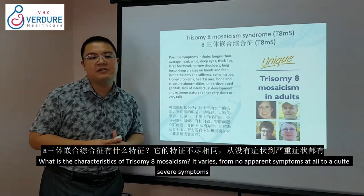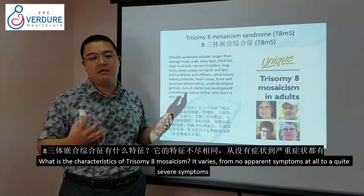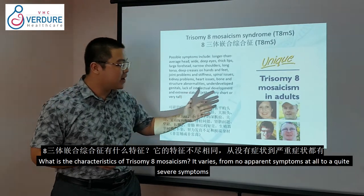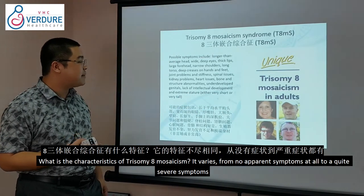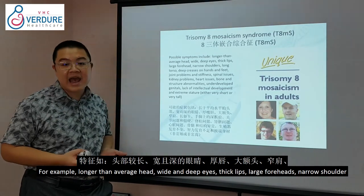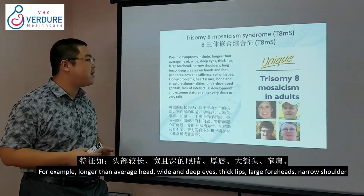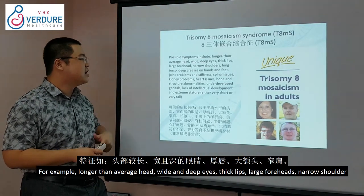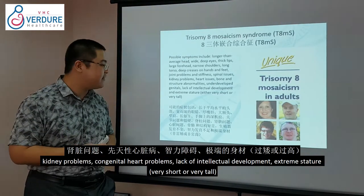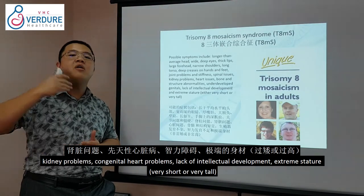The characteristics of trisomy 8 mosaicism can vary widely — from no apparent symptoms to quite severe. Examples include a longer-than-average head, wide and deep eyes, thick lips, large forehead, narrow shoulders, kidney problems, congenital heart problems, lack of intellectual development, and extreme stature — either very short or very tall.